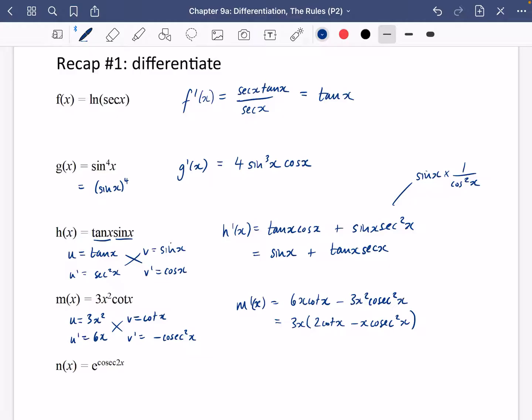And then for our last one here it's just going to be a chain rule. We're going to have n dash x. We've got e to the blah. We know that e to the blah is going to differentiate to e to the blah. But you then need to multiply by the derivative of blah.